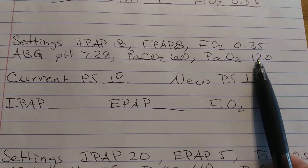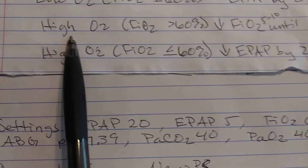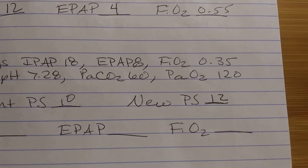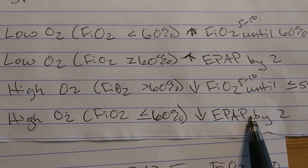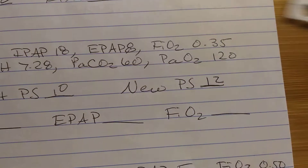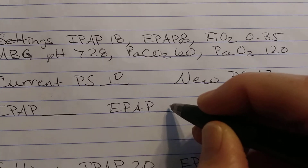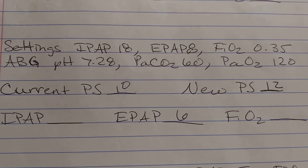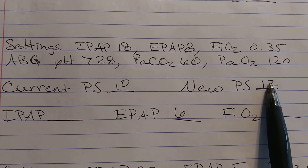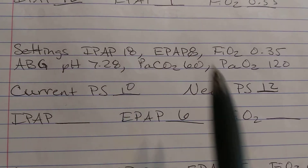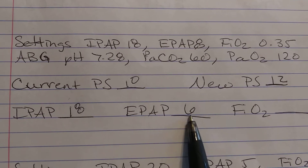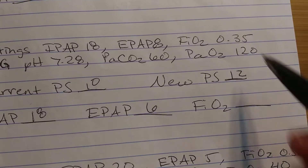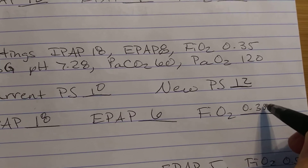Next I look at my O2. My O2 is high. Now we need to find out what our FiO2 is. Our FiO2 is only 35%, which is already less than 60, so we're going to decrease our EPAP. Our EPAP was 8; we decrease it by 2 to 6. If my EPAP is 6 and I need a pressure support of 12, then my IPAP has to be 18 — so my IPAP didn't actually change. IPAP is 18, EPAP is 6, giving a new pressure support of 12. FiO2 does not change because we already adjusted EPAP.